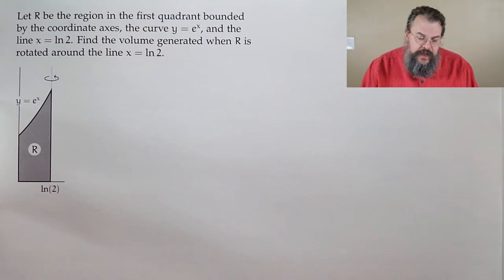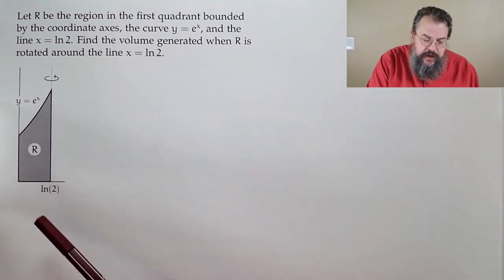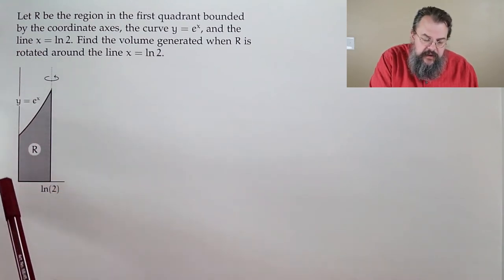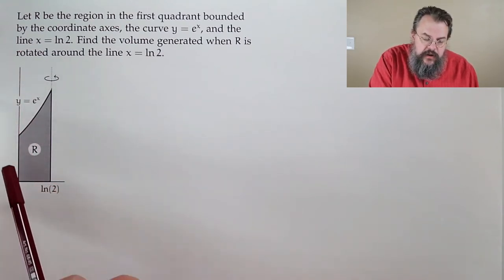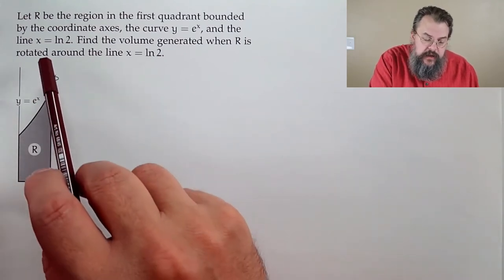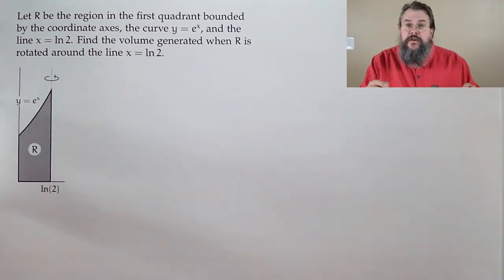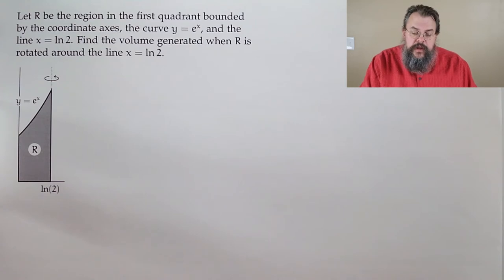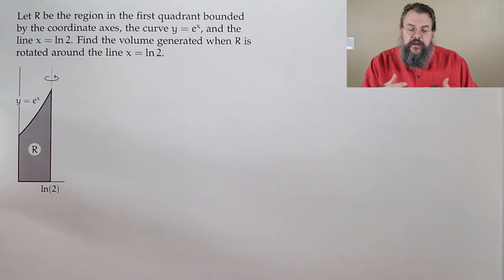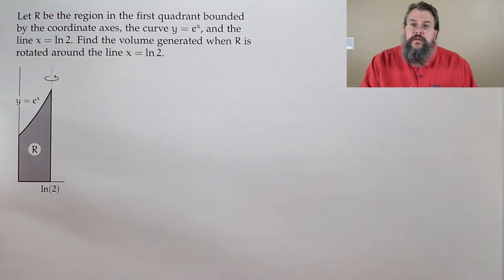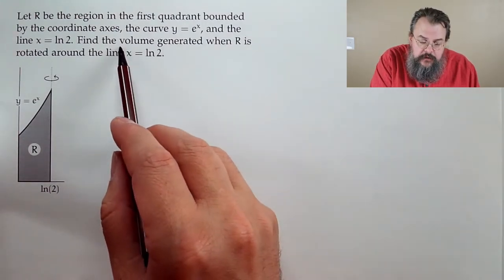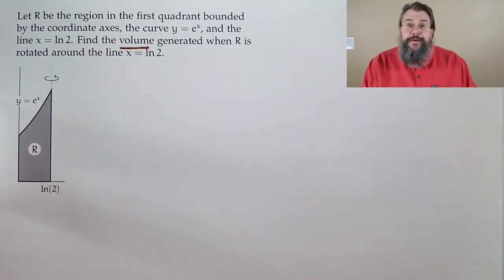Our first problem. We have region R in the first quadrant bounded by the coordinate axes, the curve y equals e to the x, and the line x equals log 2. The question: find the volume generated when R is rotated around the line x equals log 2. We see the word volume, so we're doing a volume problem.